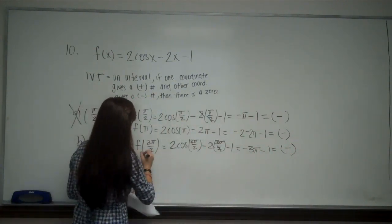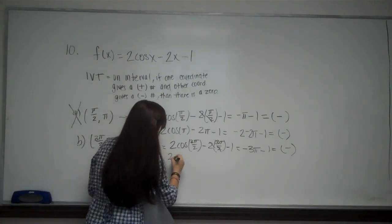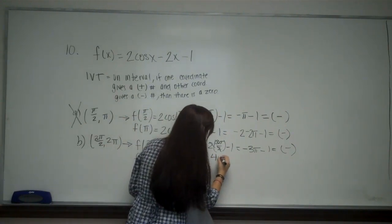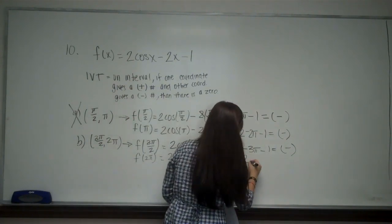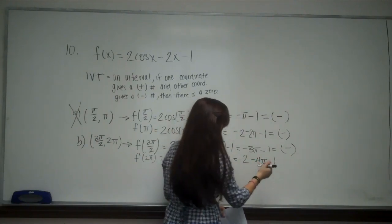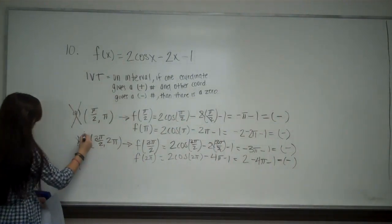And now when I test 2π, 2cos(2π) - 4π - 1. It is also going to be a negative. So B doesn't work.